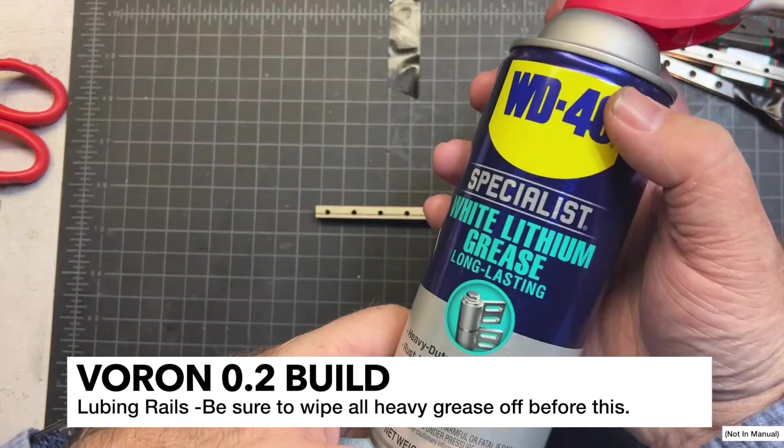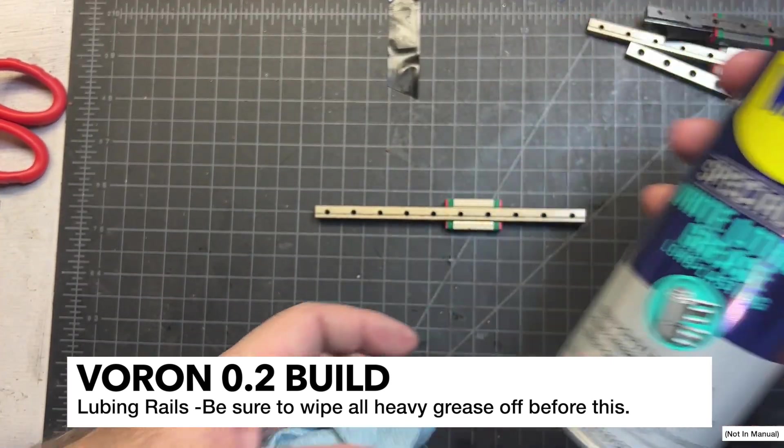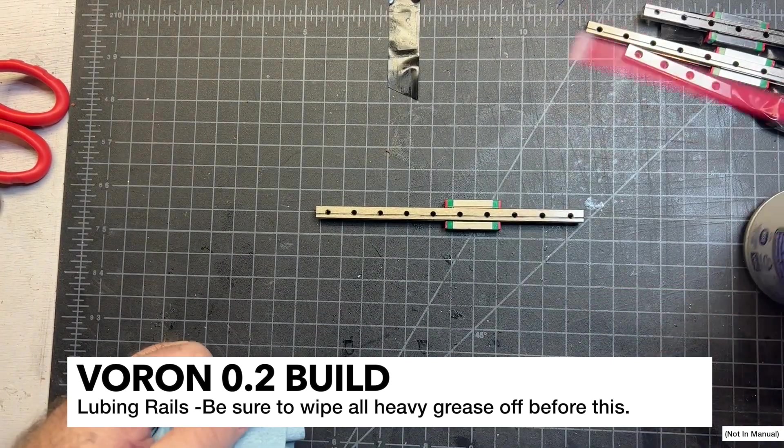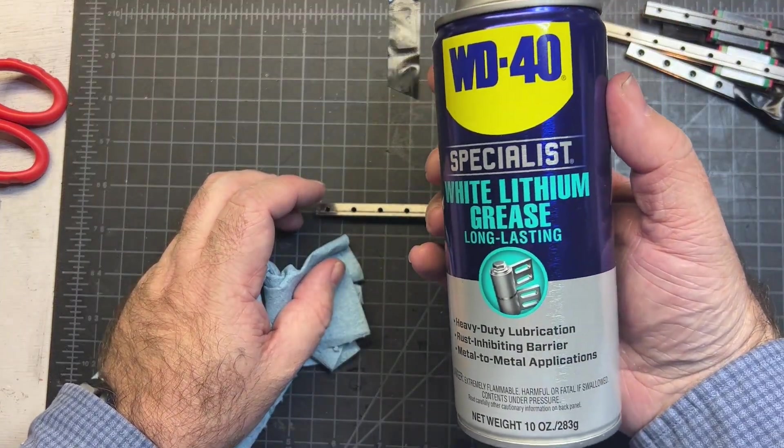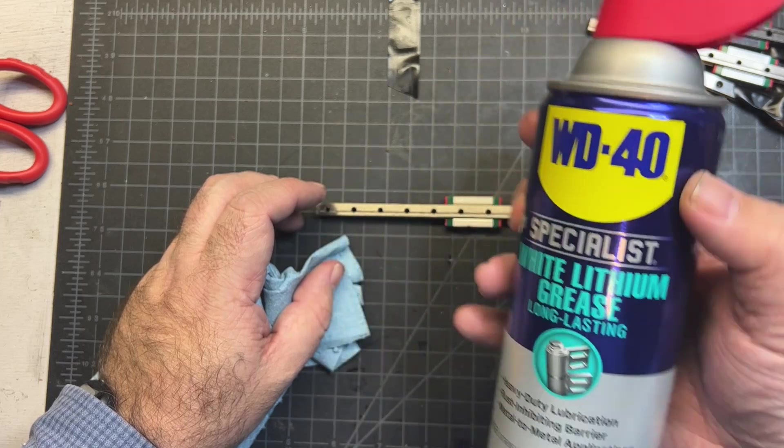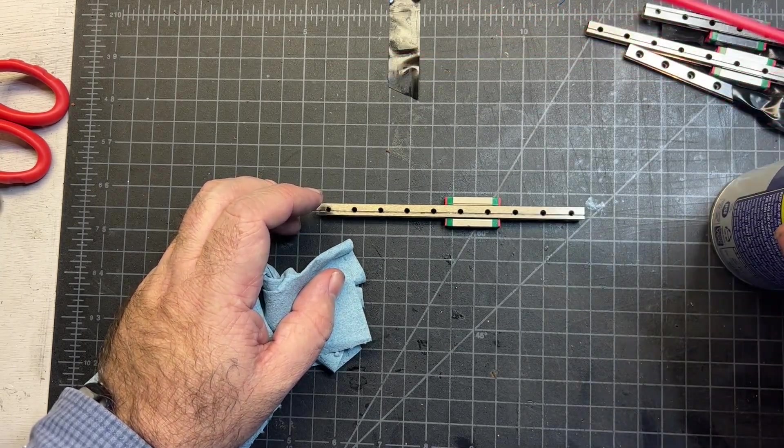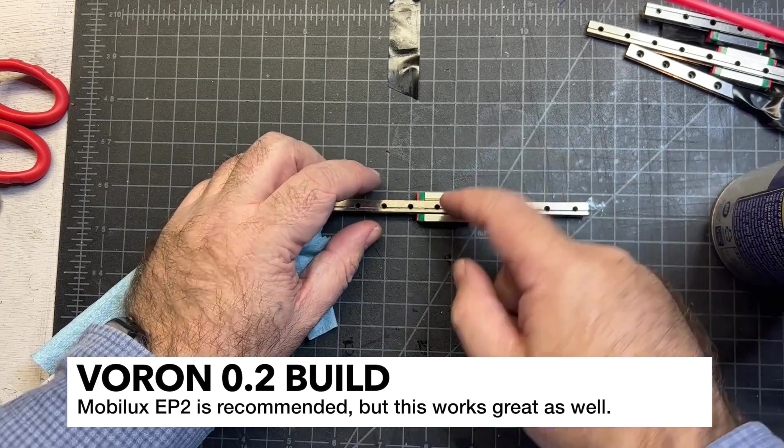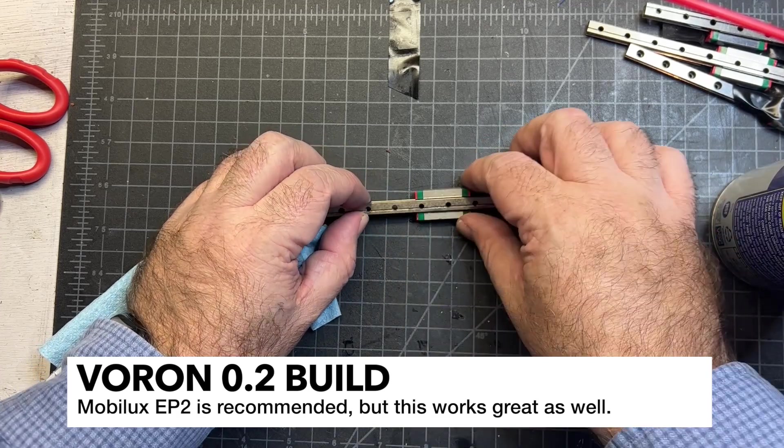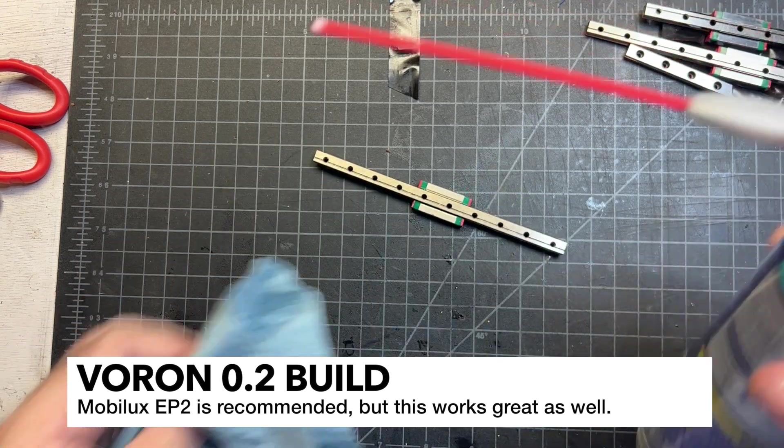I'm going to show a quick way on how to lube your rails. If you don't have Mobilux EP2, you can also use this WD-40 specialist white lithium grease. You can get this pretty much at any hardware store or big box store in the U.S. If you do have the Mobilux EP2 and you have a syringe, you can load it through these holes. But if you don't, this is another great option.